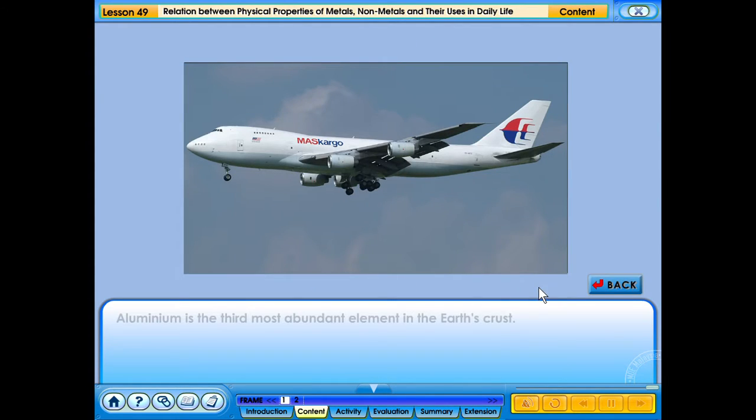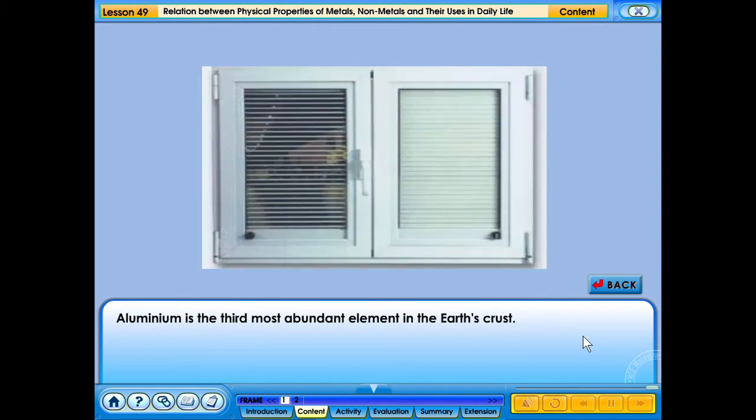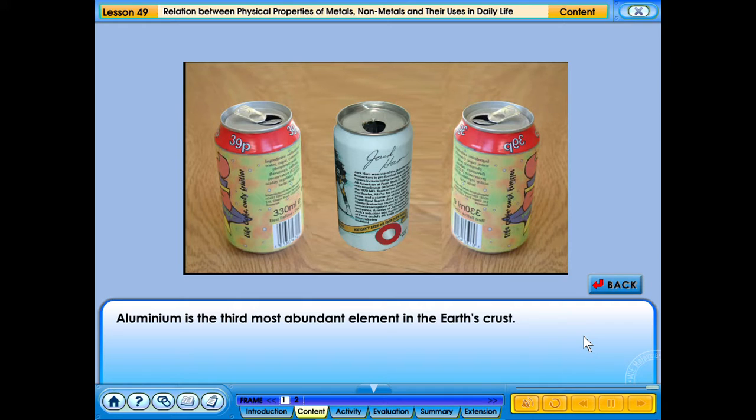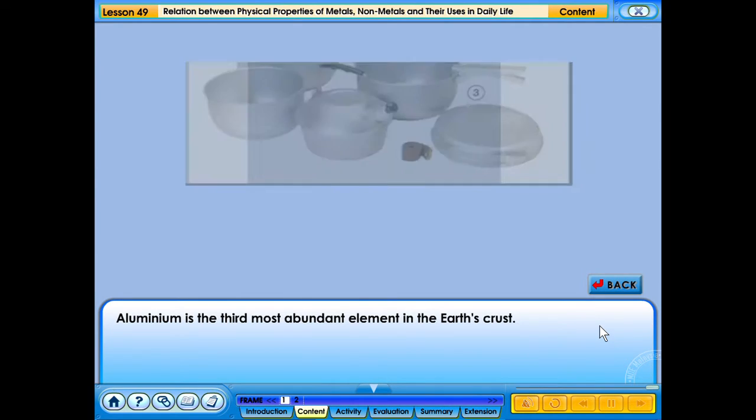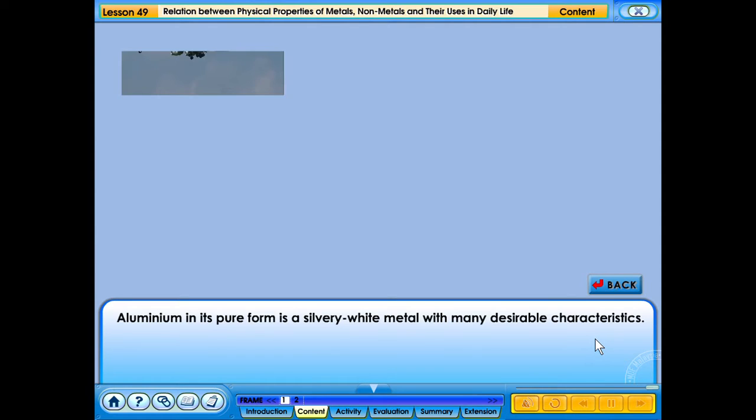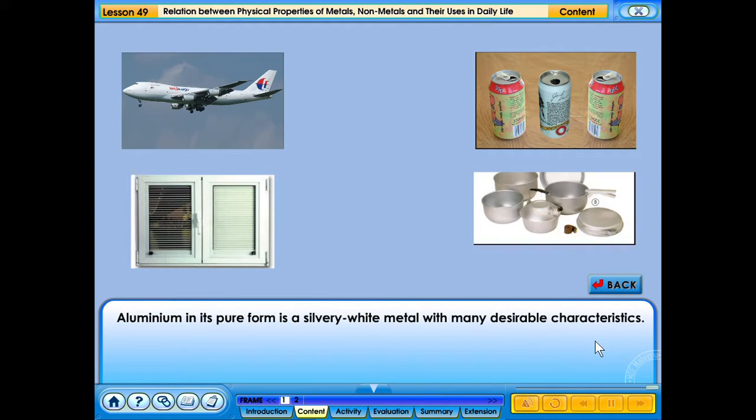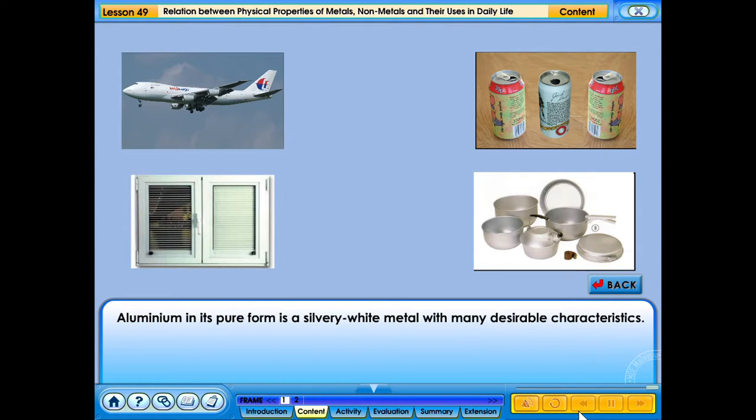Aluminum is the third most abundant element in the earth's crust. Aluminum, in its pure form, is a silvery white metal with many desirable characteristics. Click on the pictures to learn of its properties and uses.